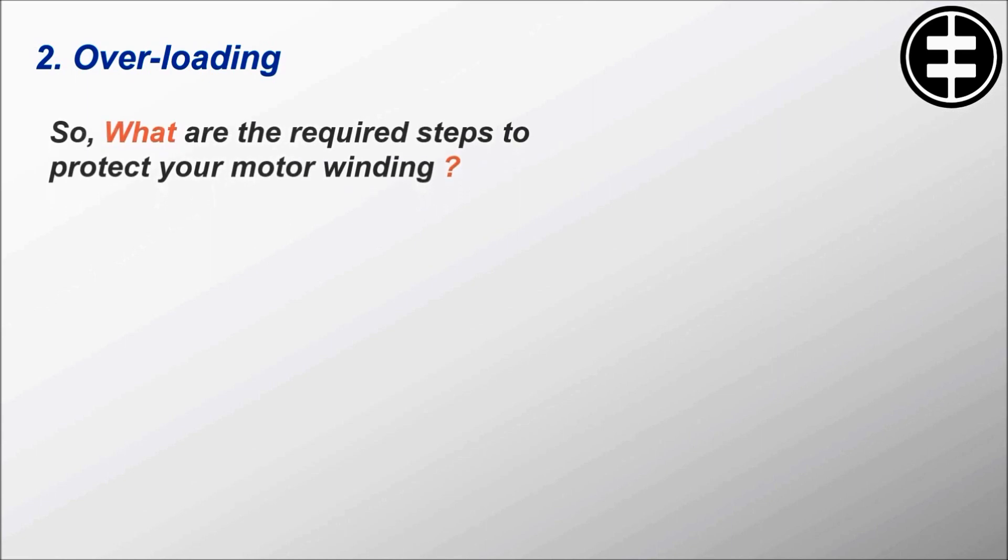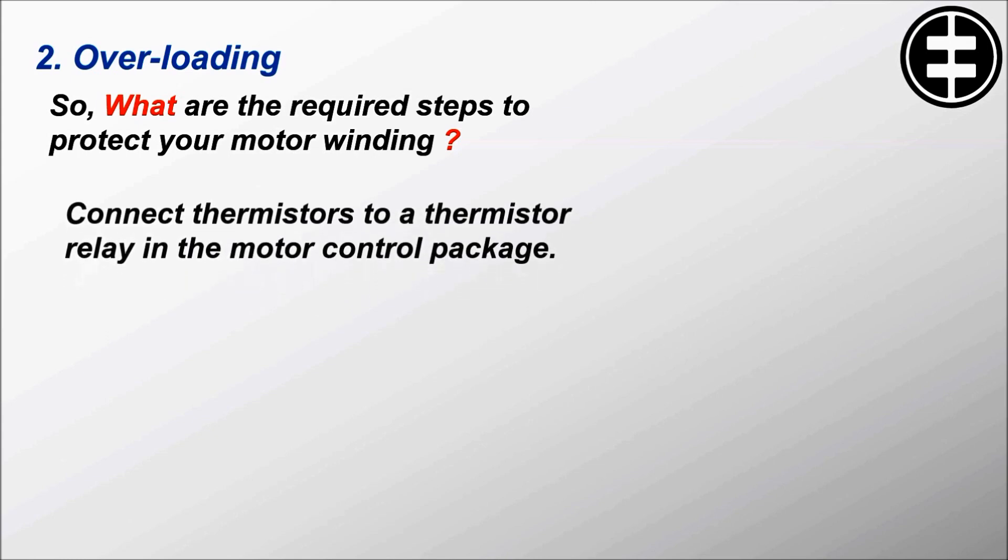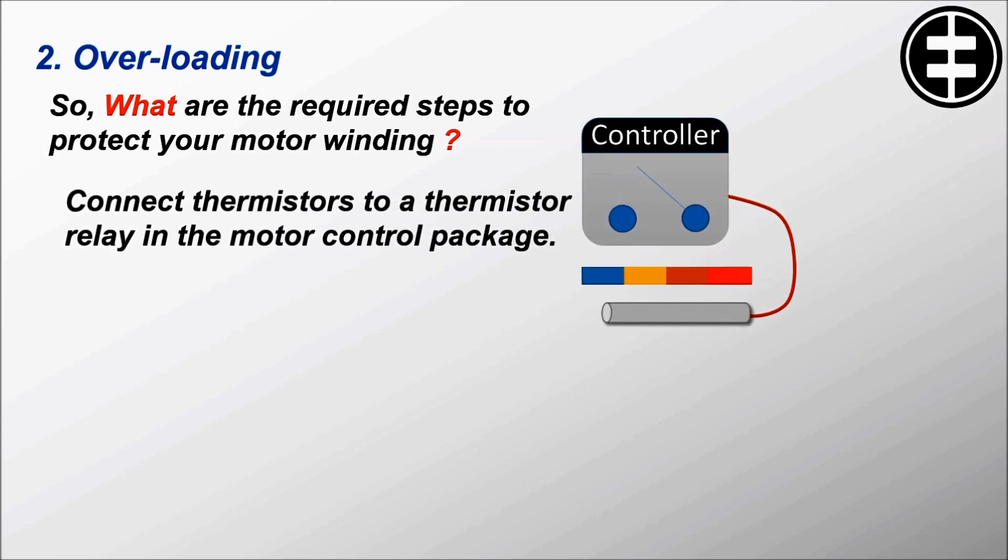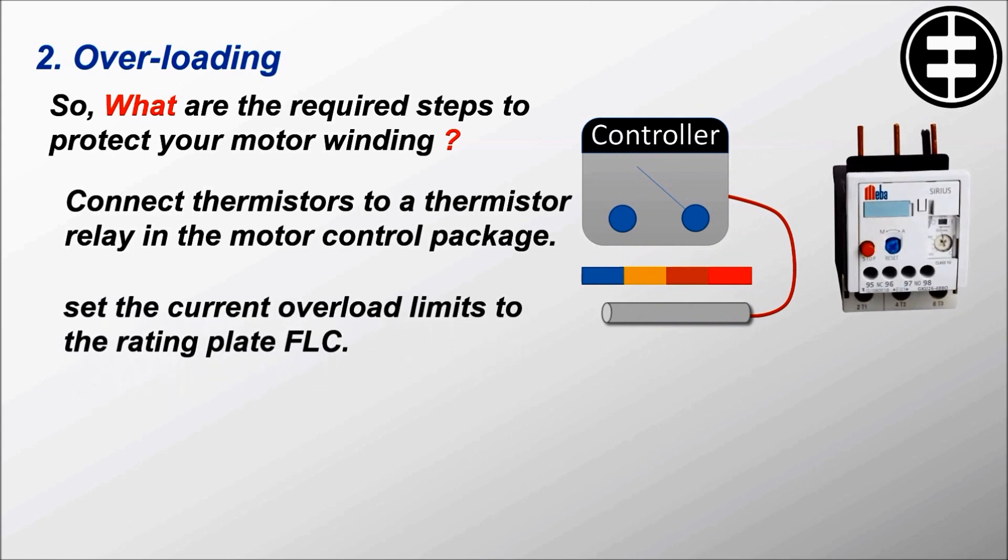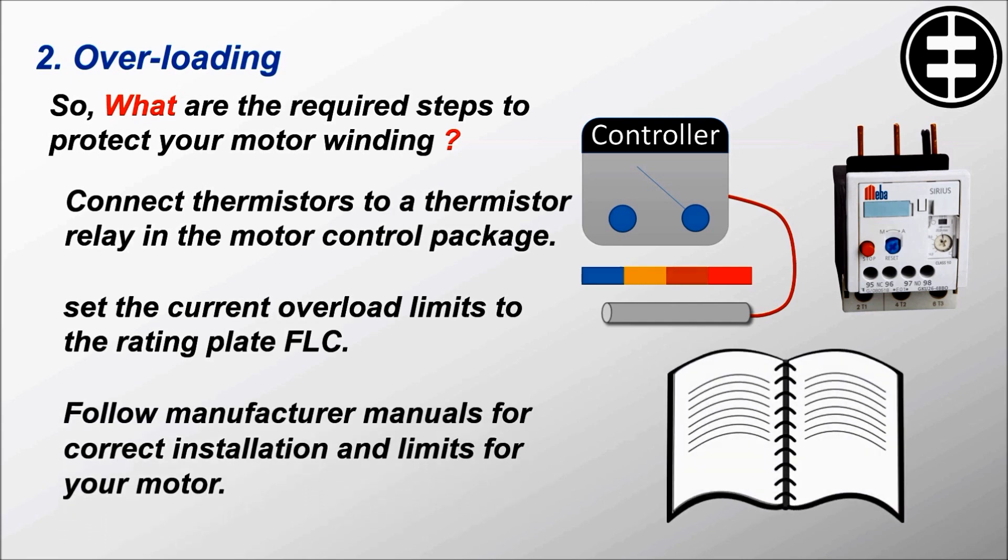So what are the required steps to protect your motor winding? 1. Connect thermistors to a thermistor relay in the motor control package. 2. Set the current overload limits to the rating plate full load current. 3. Follow manufacturer manuals for correct installation and limits for your motor.